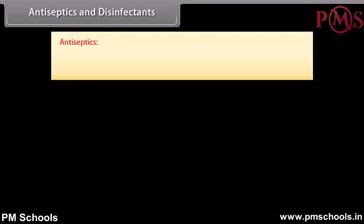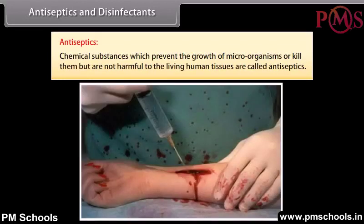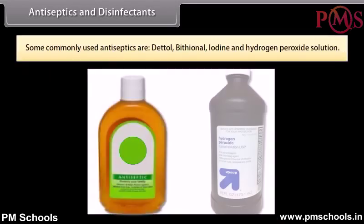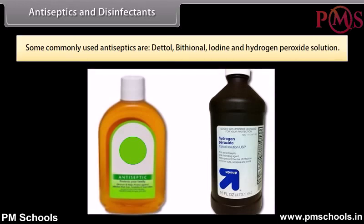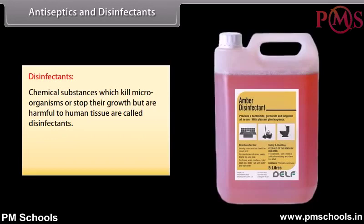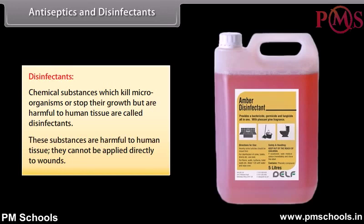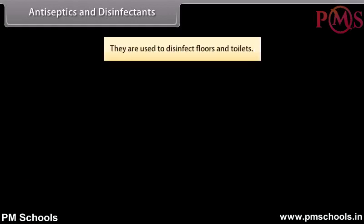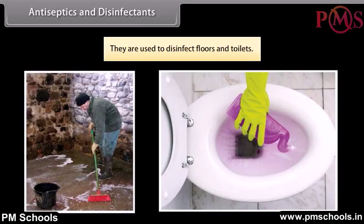Antiseptics and disinfectants: Antiseptics are chemical substances which prevent the growth of microorganisms or kill them but are not harmful to living human tissues. Antiseptics are applied to living tissues such as wounds, ulcers, and diseased skin surfaces. Some commonly used antiseptics are Dettol, bithional, iodine, and hydrogen peroxide solution. Disinfectants are chemical substances which kill microorganisms or stop their growth but are harmful to human tissues. They cannot be applied directly to wounds. They are used to disinfect floors and toilets. For example, phenol, sulphur dioxide, and chlorine.